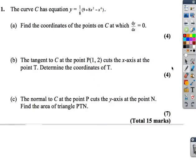We're going to have a look at a couple of differentiation questions. This is the first one. We've got a curve with equation y equals 1 over 8 times this here. Find the coordinates of the point on C at which dy by dx equals 0.